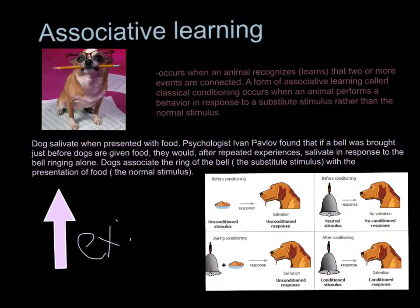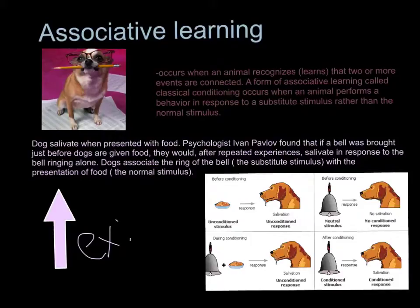Associative learning occurs when an animal recognizes or learns that two or more events are connected. A form of associative learning is called classical conditioning. This occurs when an animal performs a behavior in response to a substitute stimulus rather than the normal stimulus. For example, dogs salivate when presented with food. Psychologist Ivan found that if a bell was rung just before dogs were given food, they would, after repeated experiences, salivate in response to the bell ringing alone. Dogs associate the ring of the bell — the substitute stimulus — with the presentation of food, the normal stimulus.